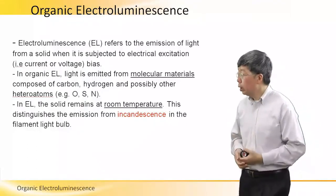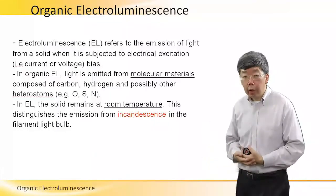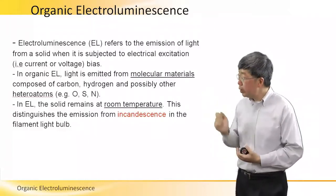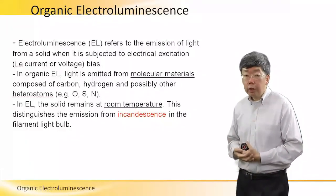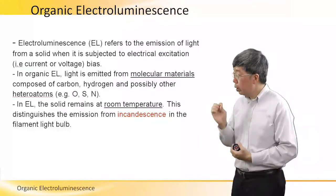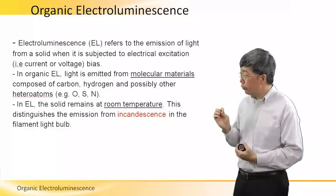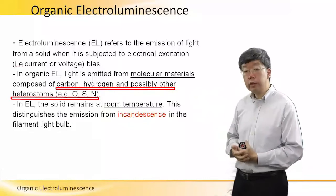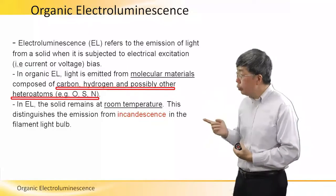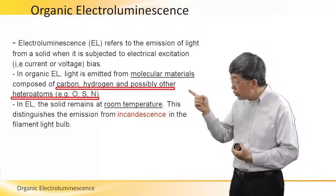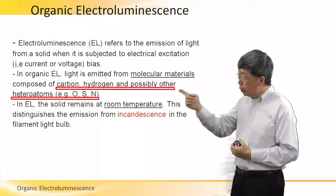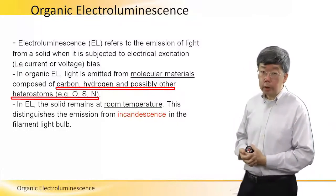One important point about organic EL is that the light which we can see is emitted from molecular materials. These materials consist of the following atoms: carbon, hydrogen, and sometimes also oxygen, sulfur, or nitrogen. The last three atoms are usually called the heteroatoms.